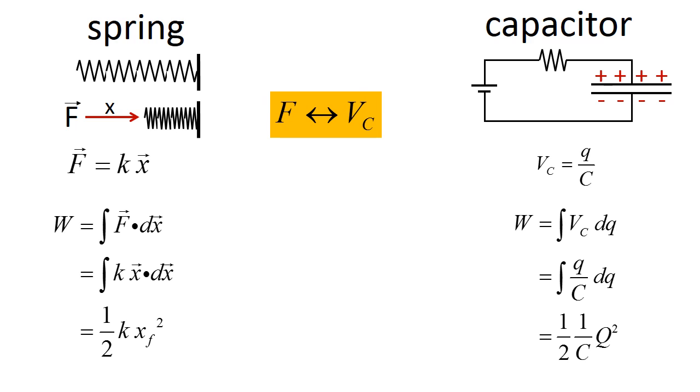So we can make these analogies. Force in the spring is analogous to the voltage on the capacitor. The spring constant is analogous to one over c. And position in the spring is analogous to charge in the capacitor circuit.